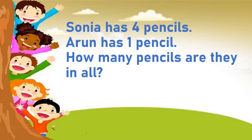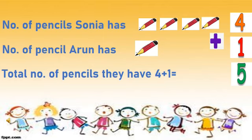Hooray! We have one more problem to solve. Sonia has 4 pencils. Arun has 1 pencil. How many pencils are there in all? So what do we have to do? Again we have to add. Number of pencils Sonia has: 4. Number of pencils Arun has: 1. So the total number of pencils they have is 4 plus 1, which will be equal to 5.